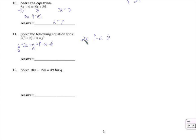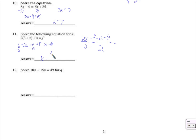F minus A minus 6 — whenever I hit undo, it just gets rid of a lot of the tiny marks. Anyway, divide by 2 — that's what we'd do if we had 2x on one side — and x would equal this crazy thing: F minus A minus 6, divided by 2.